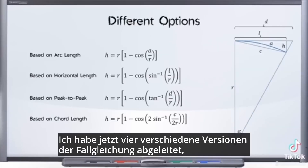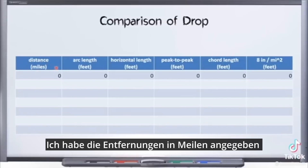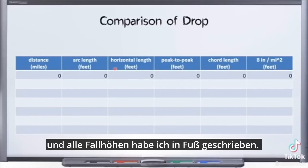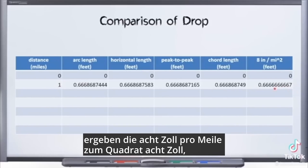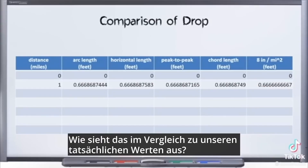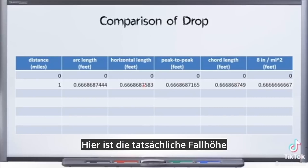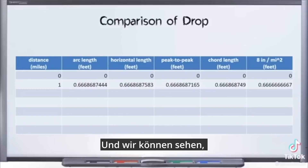I have now derived four different versions of the drop equation to compare to the eight inches per mile squared estimate. I've got the distances in miles and all of the drop distances written in feet. If you're one mile away, the eight inches per mile squared will give you eight inches — that comes out to two thirds of a foot. How does that compare to our actual values? Here's the actual amount of drop distance according to these different equations, and we can see that's super close.